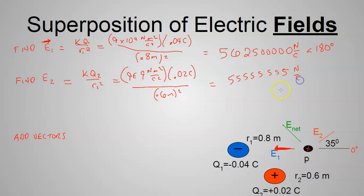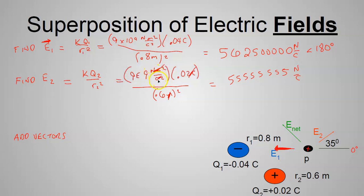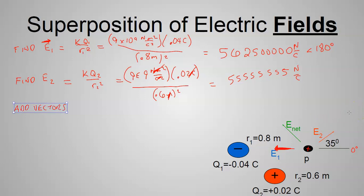Checking units: coulombs cancel one factor, meter² cancels meter², leaving newtons per coulomb on top and coulombs on the bottom — confirming newtons per coulomb. Now for the direction of E₂: there's a positive charge, so a positive test charge at P is repelled — pushed away at a 35° angle as given in the problem. So E₂ = 5×10⁵ N/C at 35°.